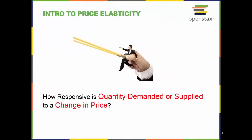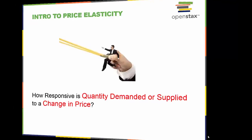How responsive is quantity demanded or quantity supplied to a change in price? In other words, how much does quantity change if price changes? The answer depends on the good or service we are considering and how elastic the demand or supply of that good or service is. Elasticity refers to the responsiveness of something. We use similar terminology with rubber bands when we discuss how elastic a rubber band is in response to a force applied to cause it to stretch. In economics, this analogy helps us understand how the quantity stretches or responds to the force of changing price.